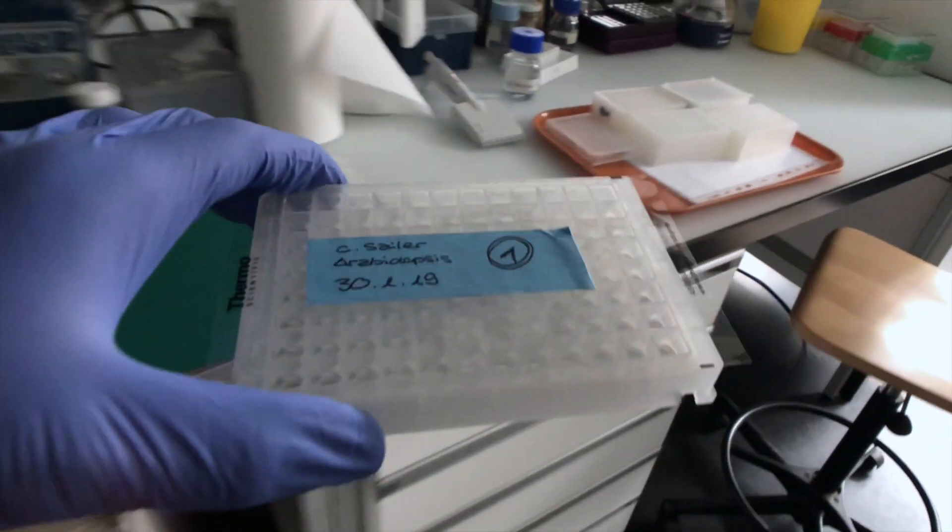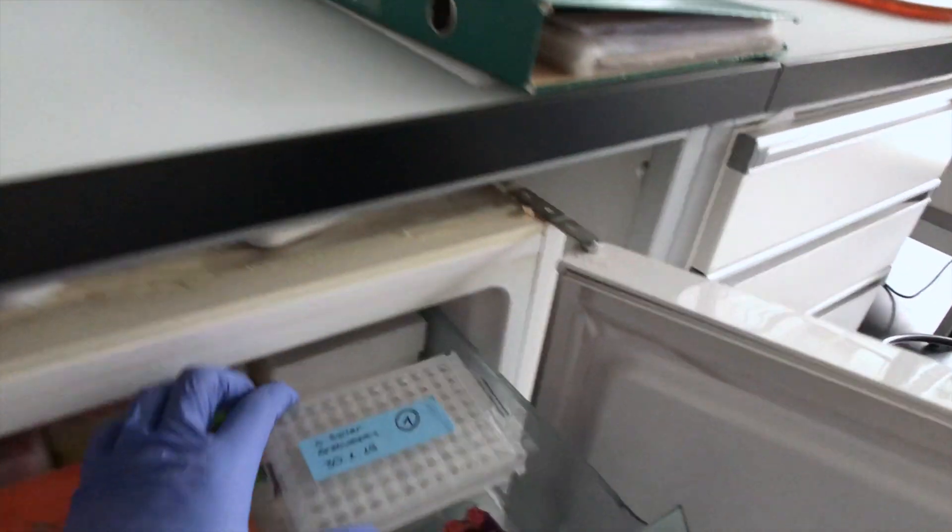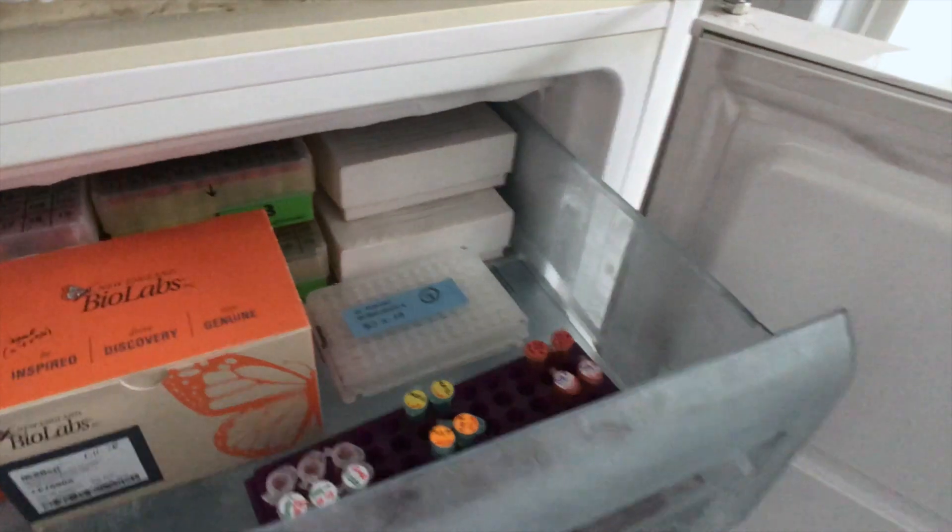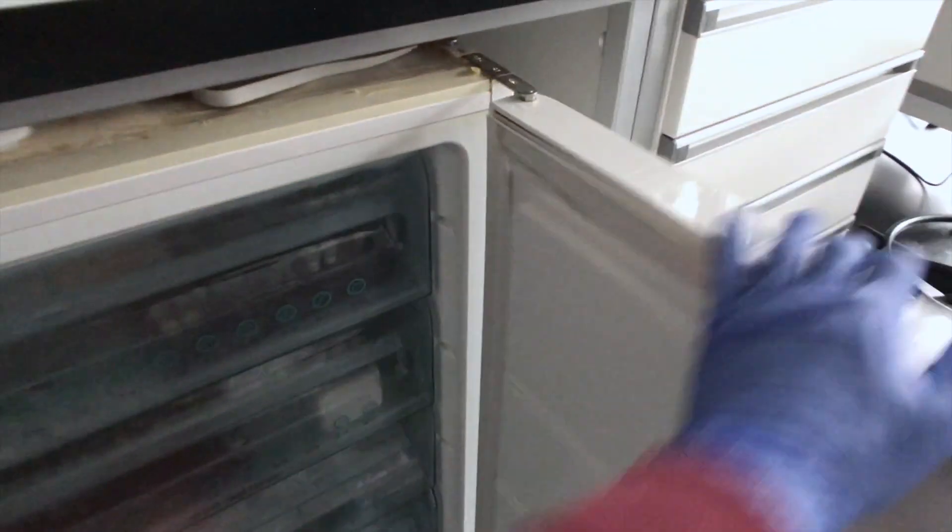The DNA that we extracted is dissolved in a liquid in these plates. To store it we freeze it at minus 20 degrees Celsius. Now we have the DNA of each plant.